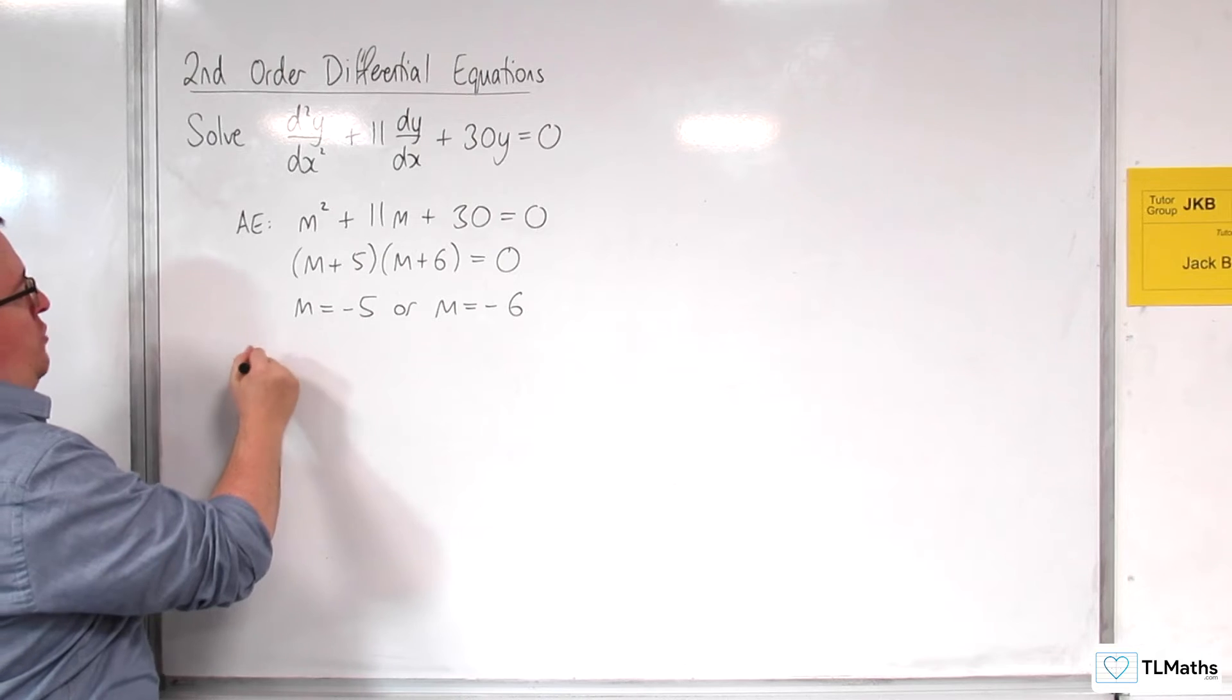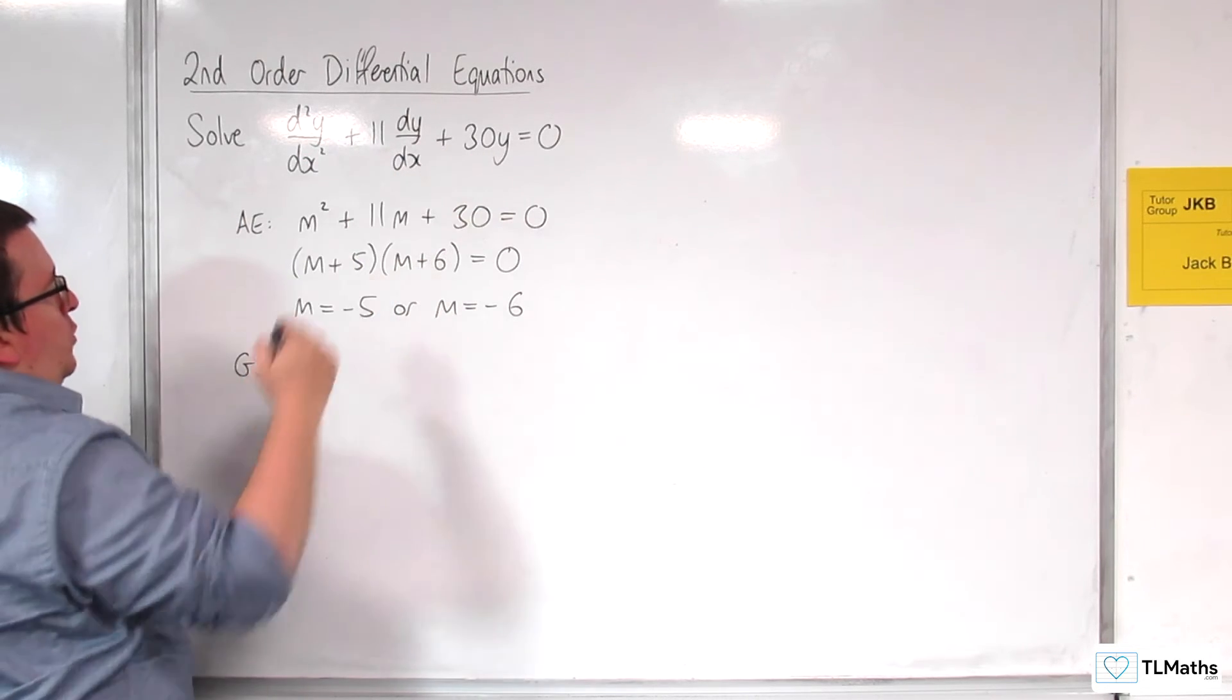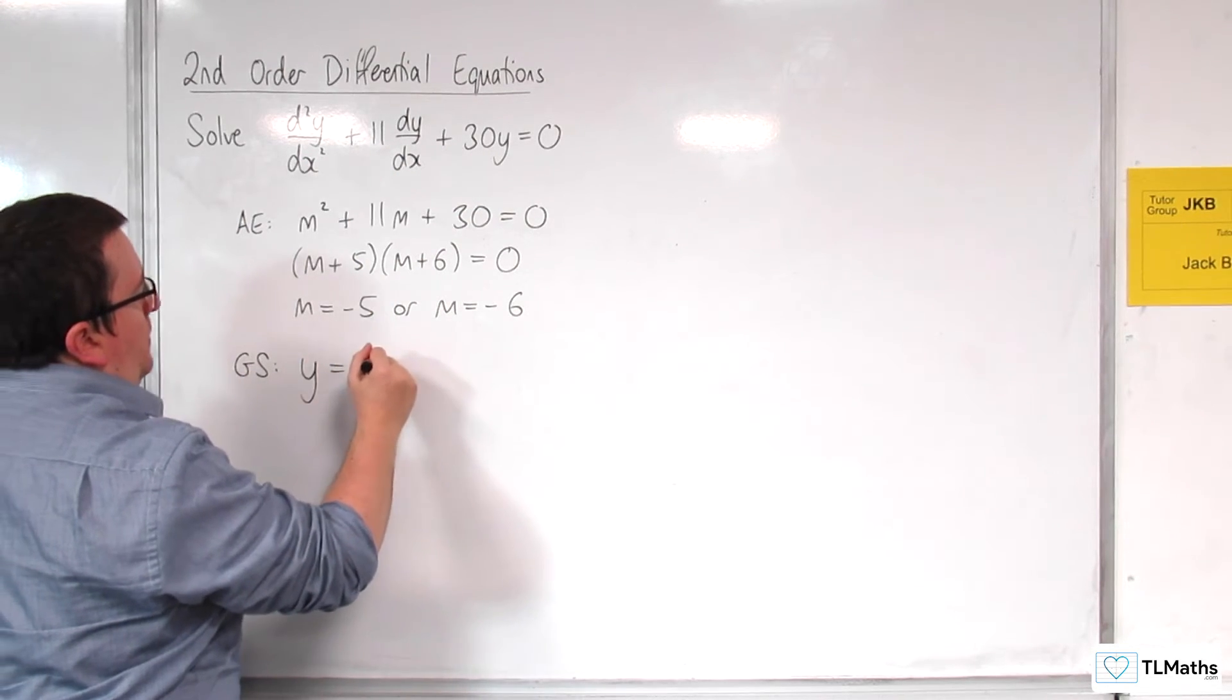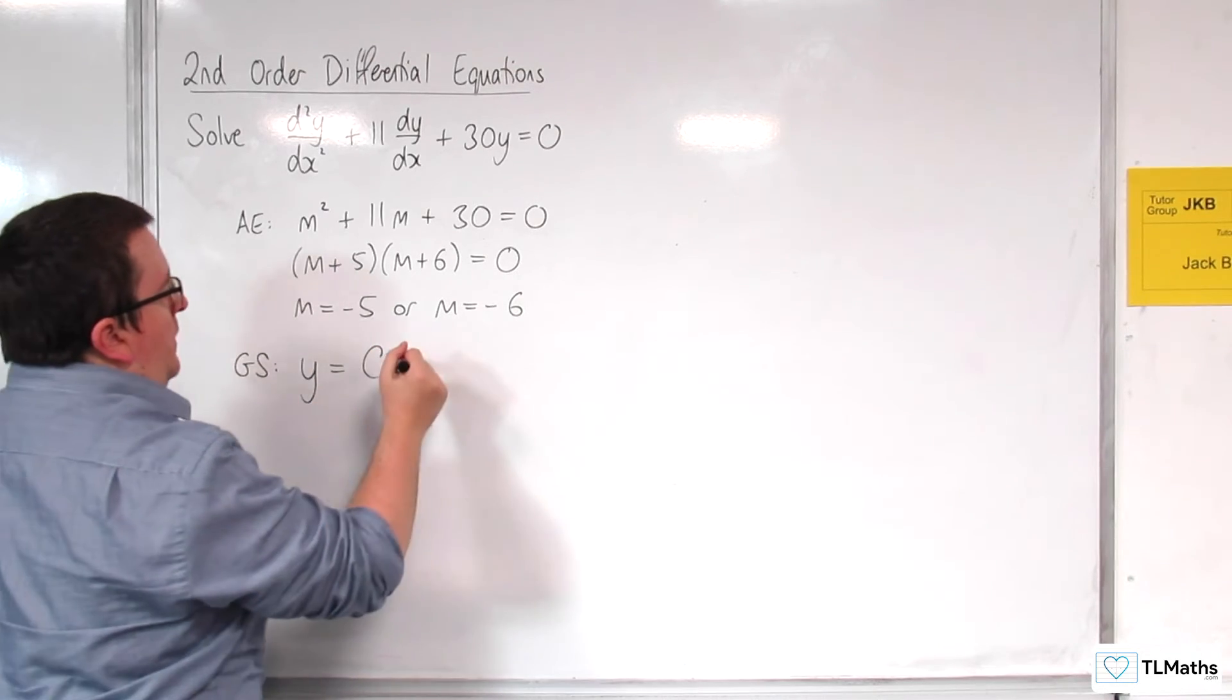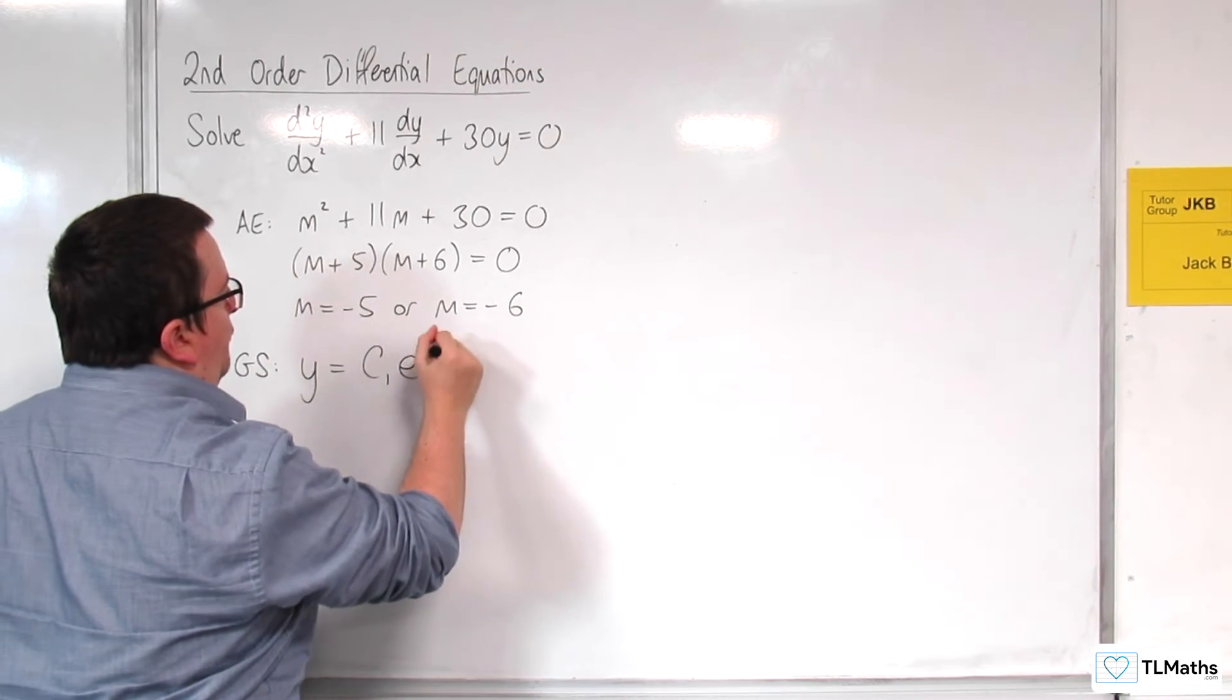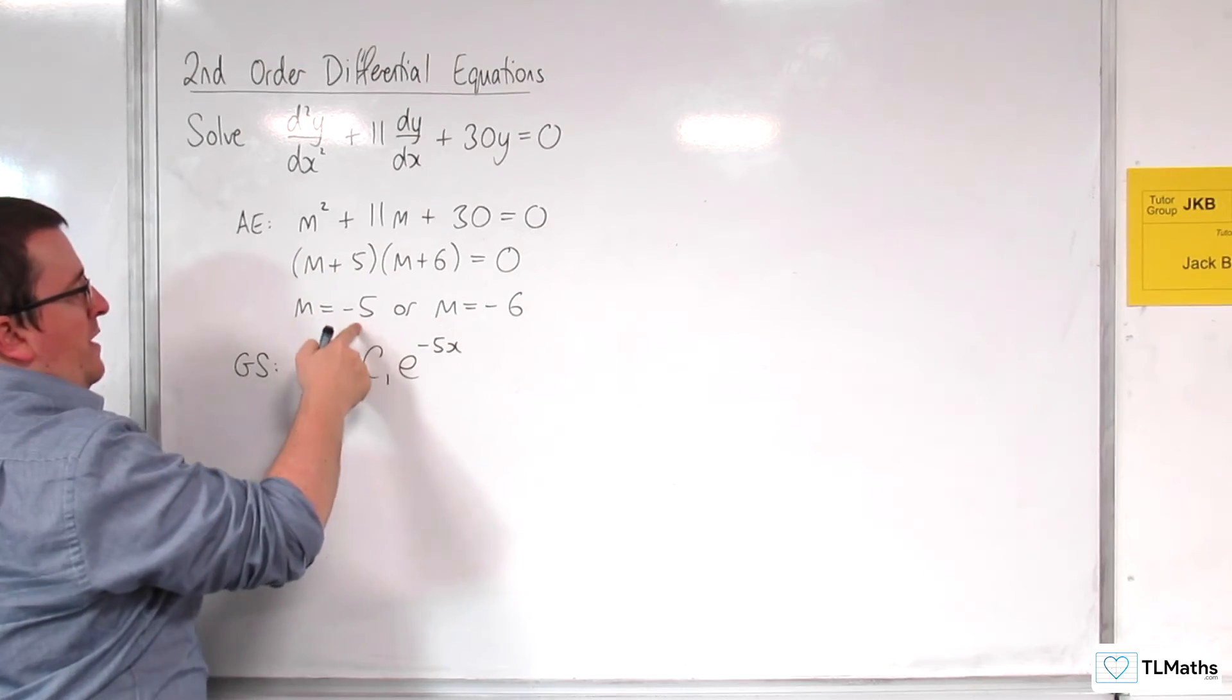So the general solution to our differential equation would be y = c₁e^(-5x). So the -5 is coming from there.